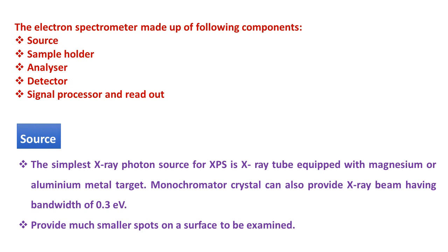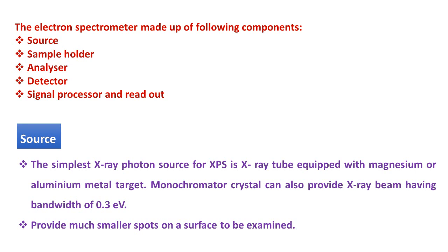First, source. The simplest X-ray photon source for XPS is X-ray tube which is equipped with magnesium or aluminum metal target. The kinetic energy of aluminum is greater than magnesium. The monochromator crystal can also provide X-ray beam having bandwidth of 0.3 eV, which provides much smaller spots on the sample surface to be examined.